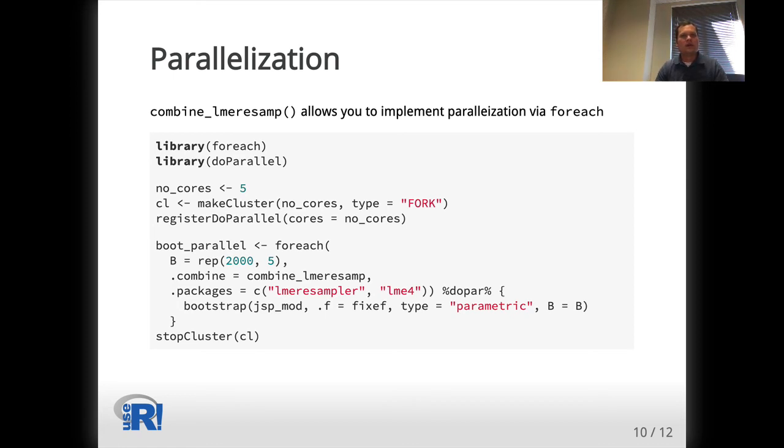In this example, I'm using a socket cluster with five cores. Within the foreach call, I specify that B equals 2,000 replicates should be run on each of the five cores, and the combine_lmeresamp function should be used to combine the results. Then, I use the dopar operator to call the bootstrap command. On my laptop, the runtime decreased by a factor of about 4.4.